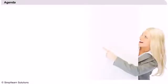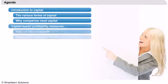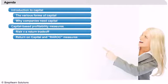Let's get started with the agenda. First, we will give an introduction to the concept of capital — what its various forms are and why companies need capital to operate. Then we will look at capital-based profitability measures, explain the impact of risk on profitability, and get familiar with a family of risk-based profitability measures called RAROC.